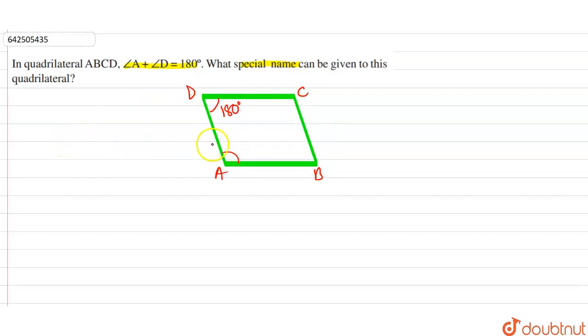Angle A plus angle D is equal to 180 degrees. So, angle A and angle D are co-interior angles, and we can say that whenever the sum of two co-interior angles equals 180 degrees, then those are co-interior angles.